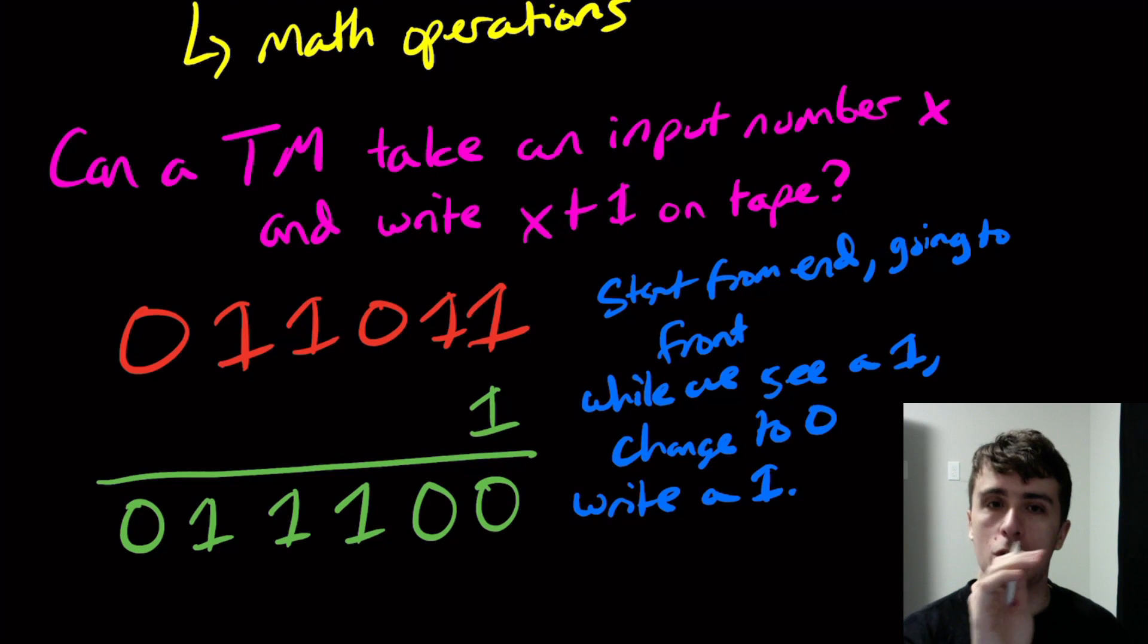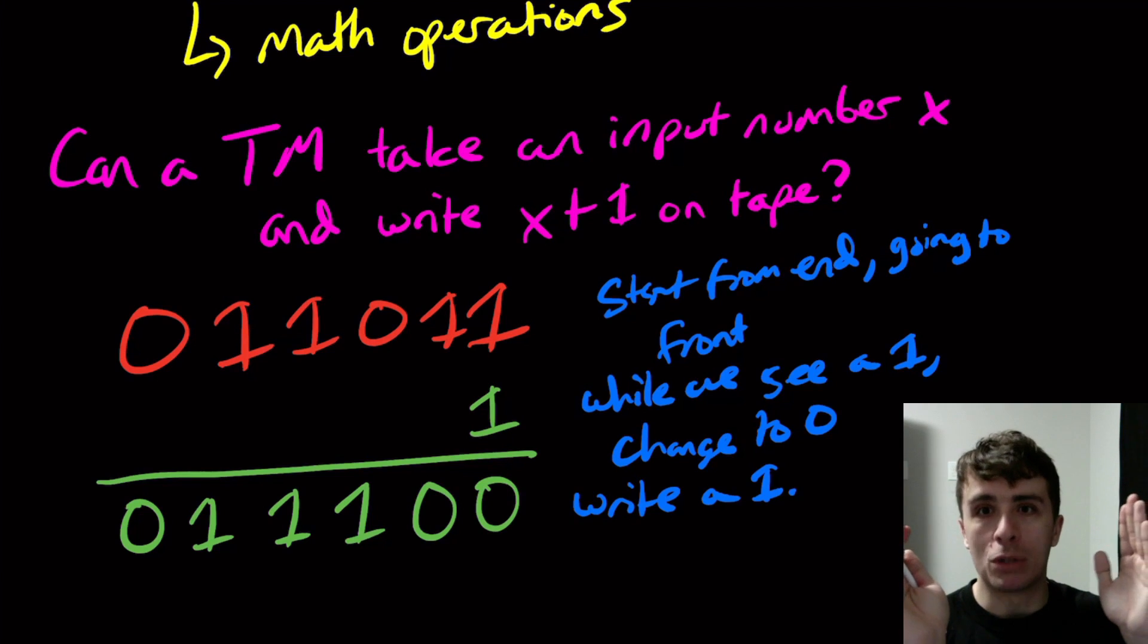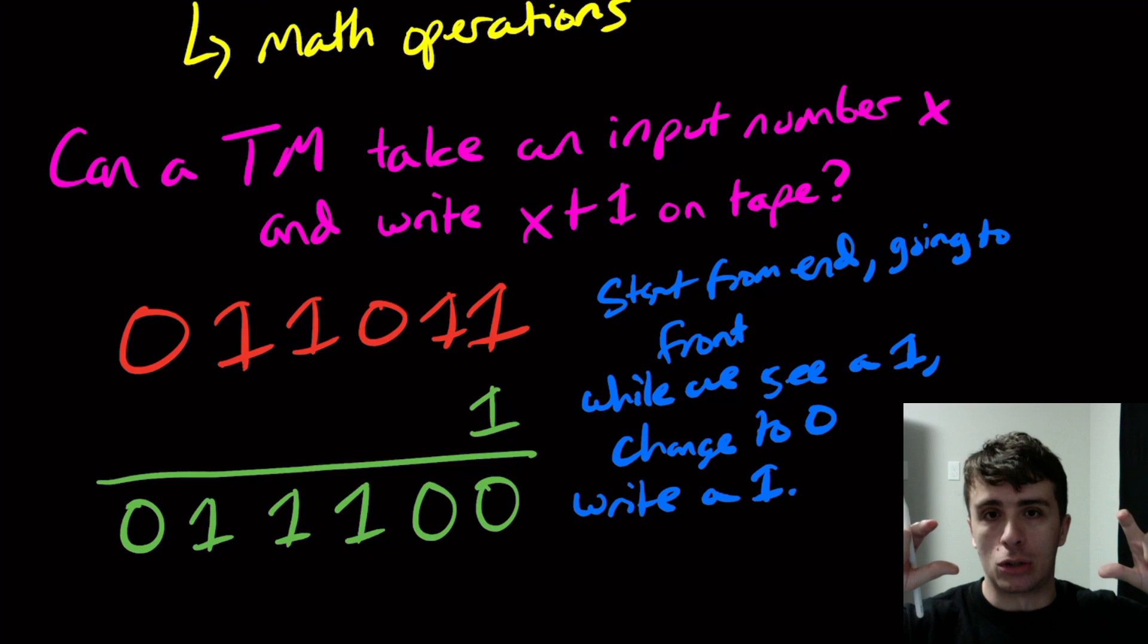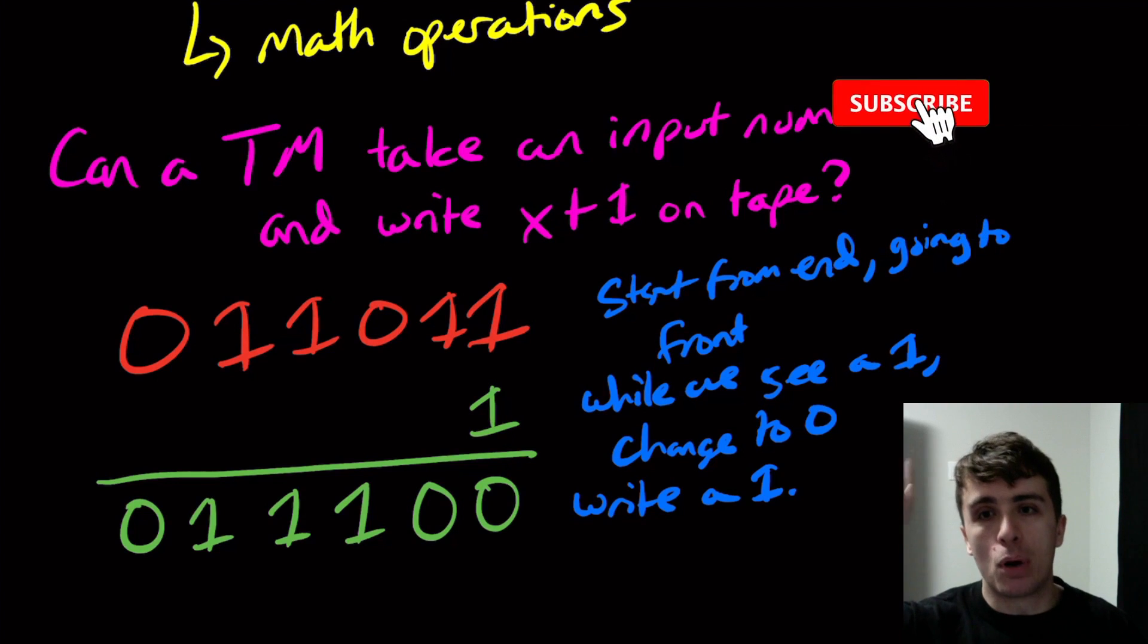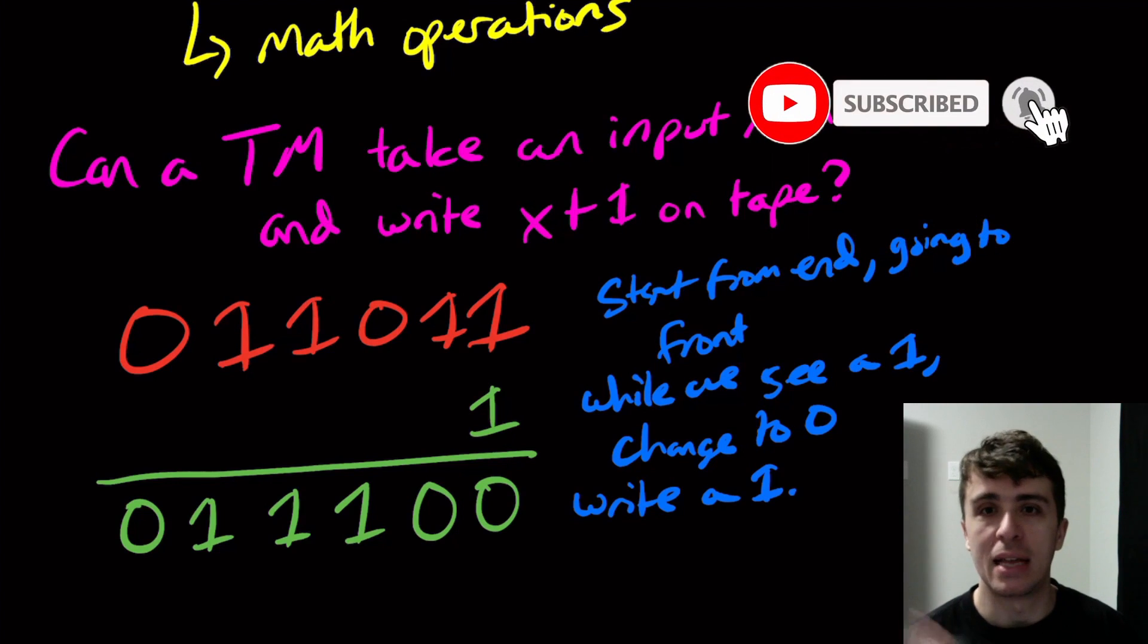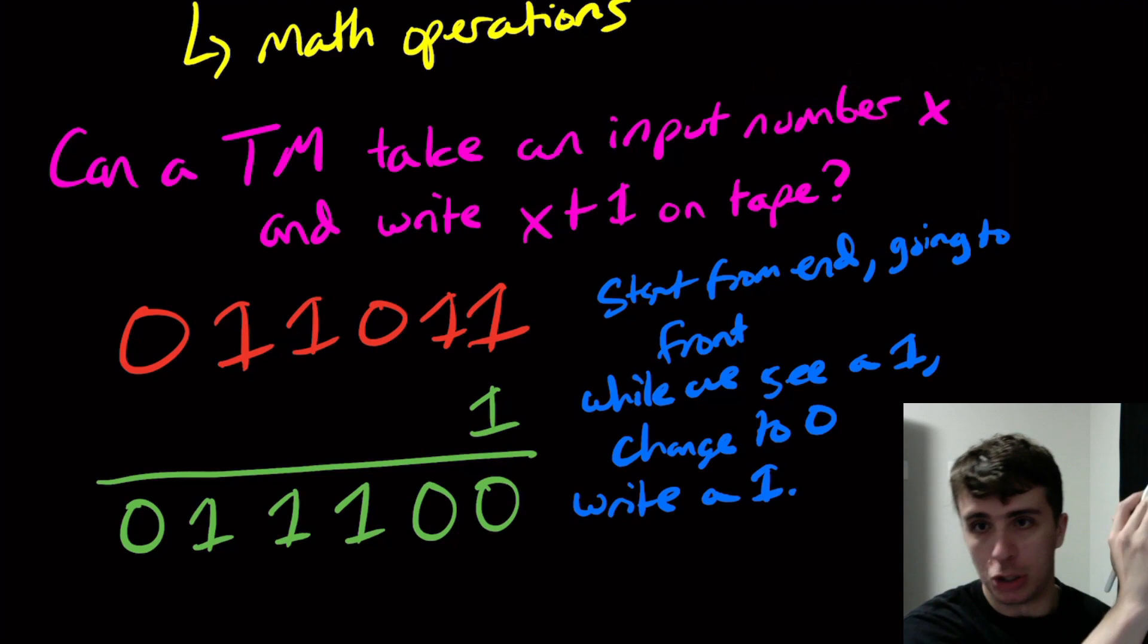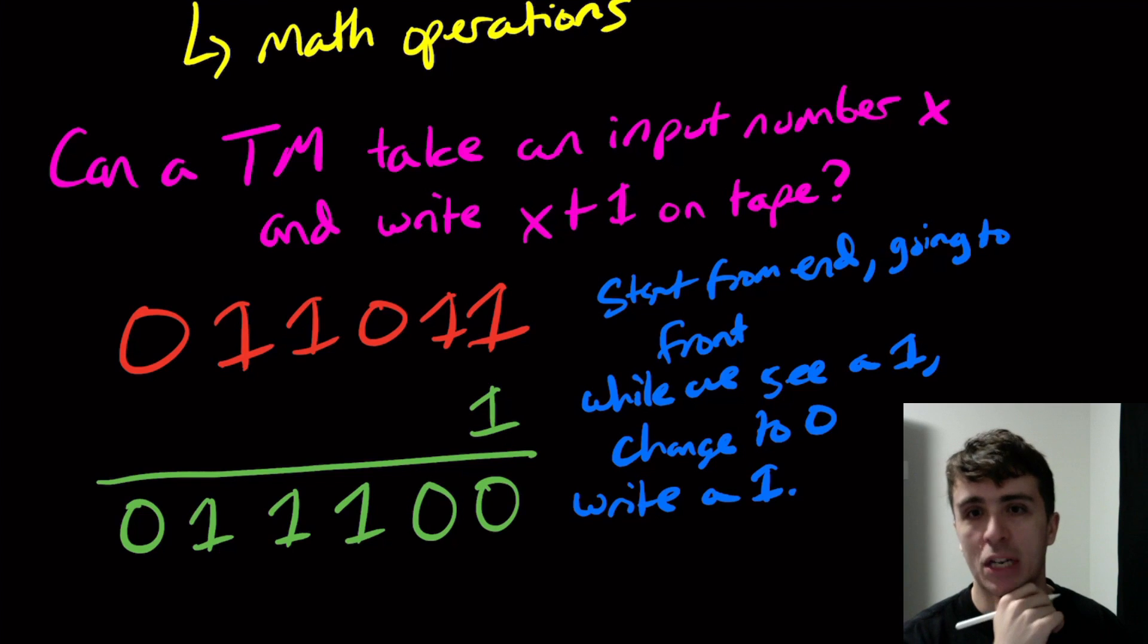At the end, we write a 1 once we're done with that. When we're done seeing 1s and changing them to 0 in the result, at the very end either if it's a 0, we change it to a 1. But if the entire number was all 1s, then by adding 1 we make the number one bit longer. We put a 1 on the front of it, and that's pretty easy to do.